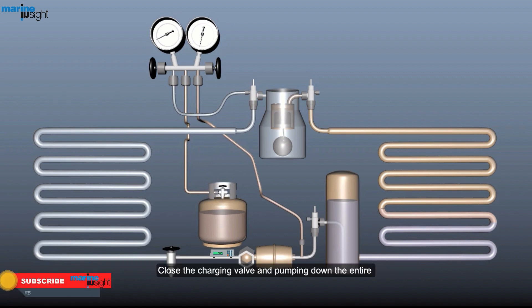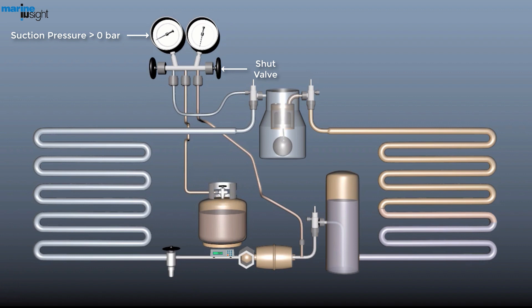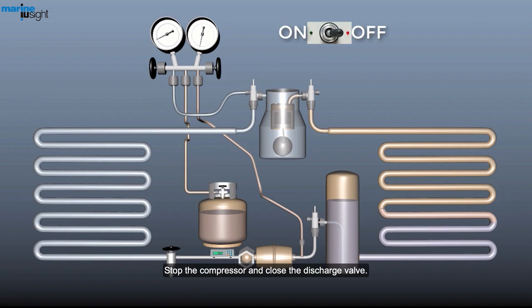Close the charging valve and pump down the entire charge until suction pressure is just above zero. Stop the compressor and close the discharge valve. Cooling water is kept running for some hours. Then air is purged out through the purging valve on the condenser until refrigerant gas appears at the valve.